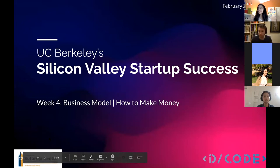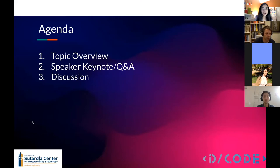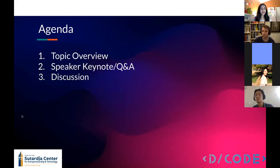It is 6:10, so hello everyone, welcome to week four of Silicon Valley Startup Success. Today's topic is going to be all about business model and how to make money. Our agenda consists of a 20 to 25 minute topic overview, then we have a really exciting speaker giving a talk, followed by a Q&A session, and then the remainder of the time will be for discussion as usual.